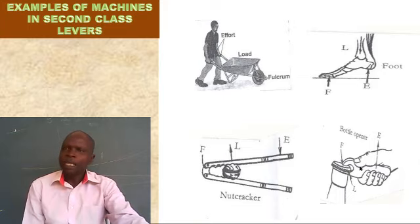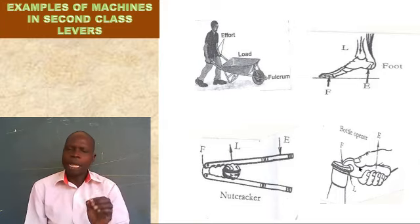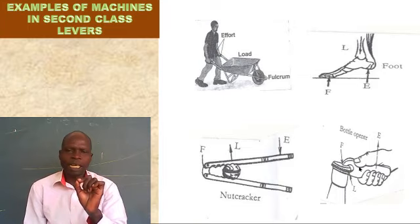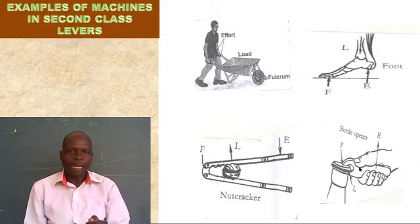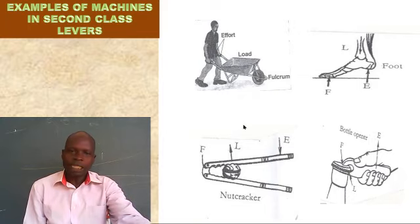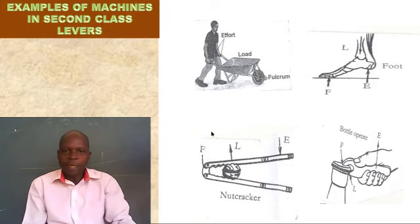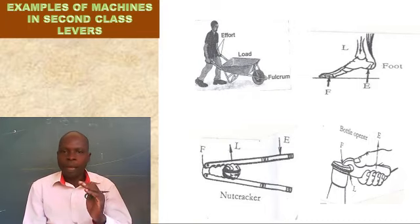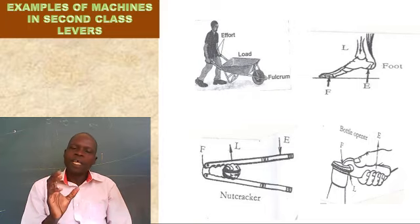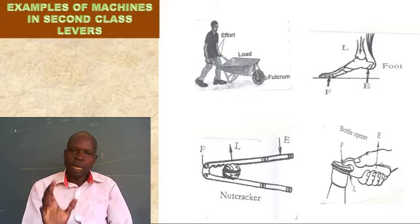There is another tool not shown in the diagram here that is also in the second class of levers. At school, whenever we send you to the secretary, sometimes you find them cutting a paper. Remember that paper cutter we have been using at school? A paper cutter also has a handle exactly like the nutcracker, but it has a bigger board on which you put your paper and then cut it. So we have our paper cutter. These are basically the tools that are in second class levers.